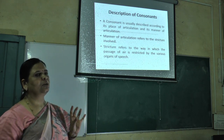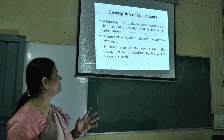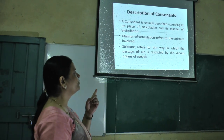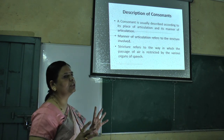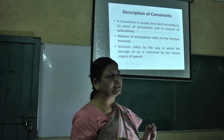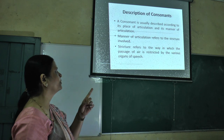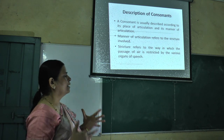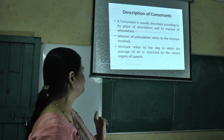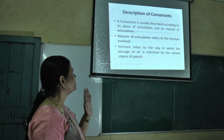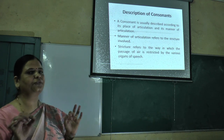Now, description of consonants. Consonants can be described under two categories. First is the place of articulation, and the second is the manner of articulation. Place of articulation means what organs are involved in the production of any consonant. The manner in which these sounds are pronounced is called the manner of articulation. The manner of articulation refers to the structure involved — structure here means restriction, the restriction of airflow.